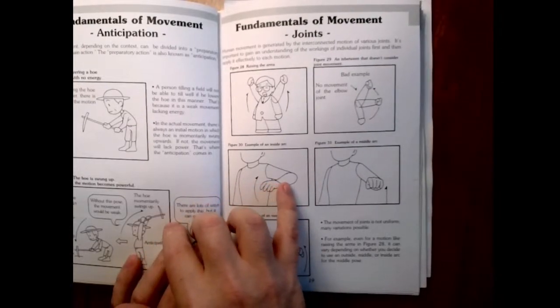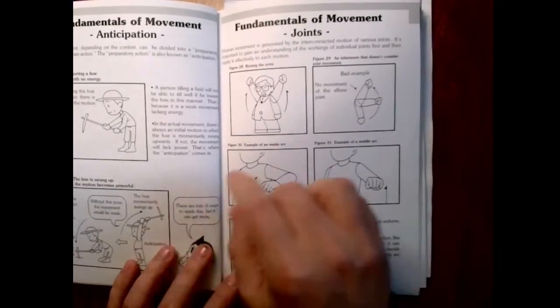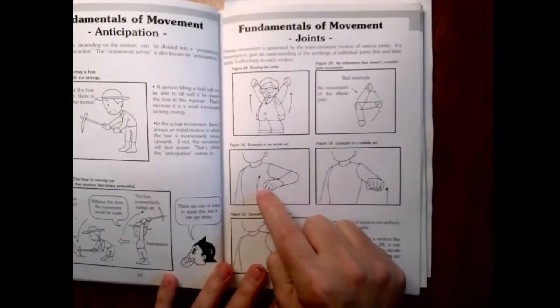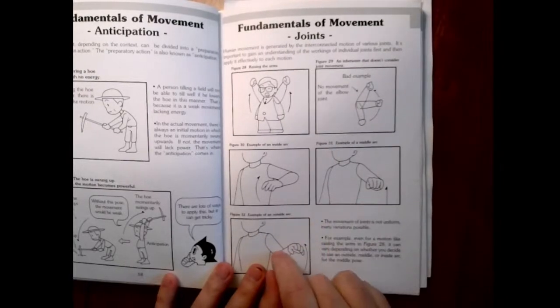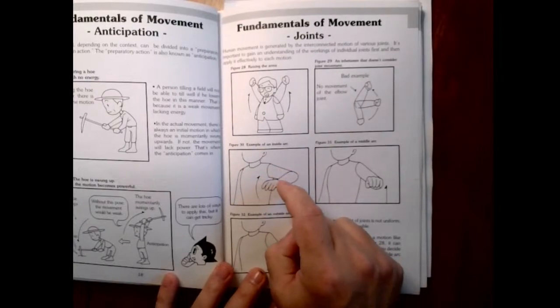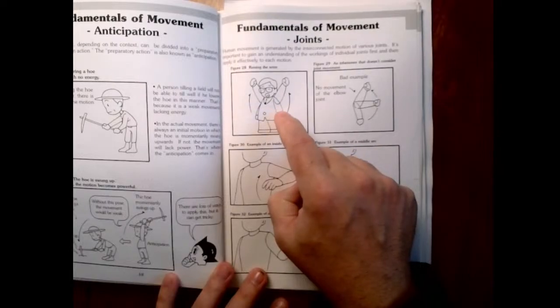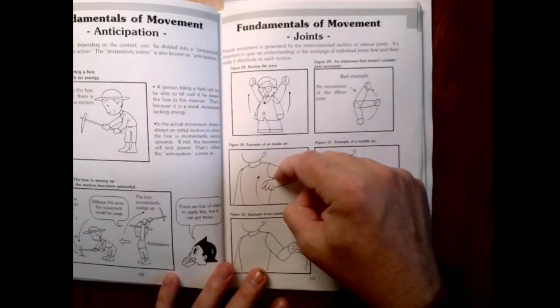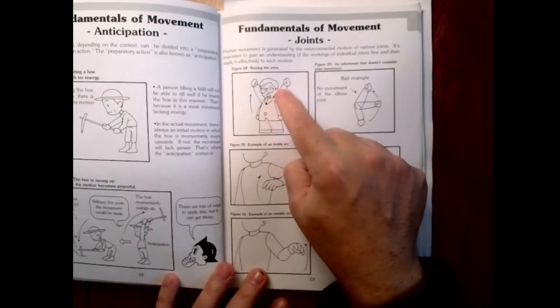So instead, you'd want to bend the elbows and the knees, and while doing so, you create an arc. You can also do something like this. But in this case, this is an inside arc where right before the arm goes from down on the sides to up in the air, you can curve it in like this, arc it in, and then it extends out.